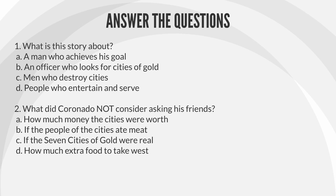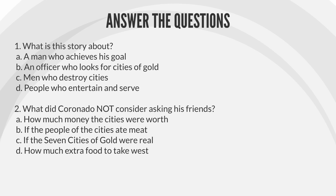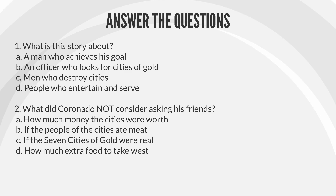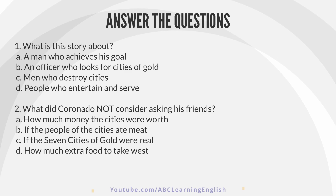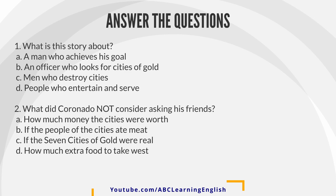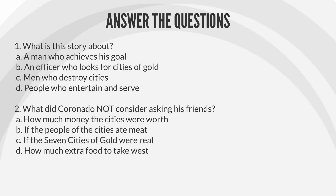1. What is this story about? A. Coronado, a man who achieves his goal. B. An officer who looks for cities of gold. C. A man who destroys cities. D. People who entertain and serve.